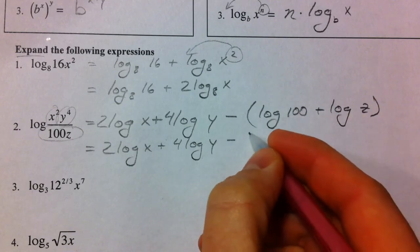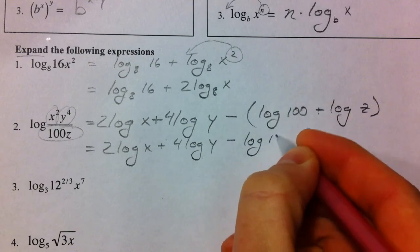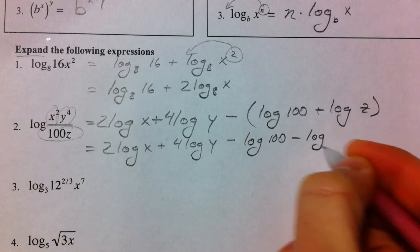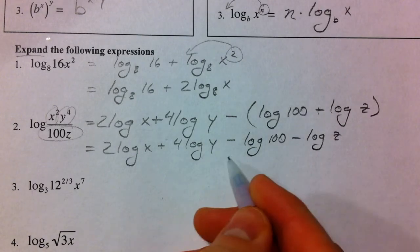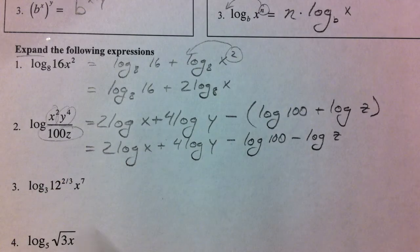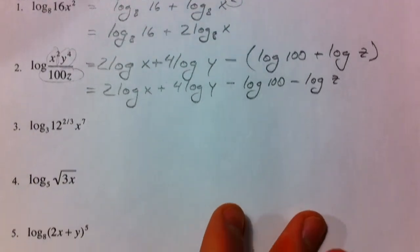Or, you could say 2 times the log of x plus 4 times the log of y, and then make sure that both of them are subtracted. Essentially, how it happens is that anything that's positive is going to end up on top, and anything that's negative is going to end up on the bottom. Just like negative exponents.